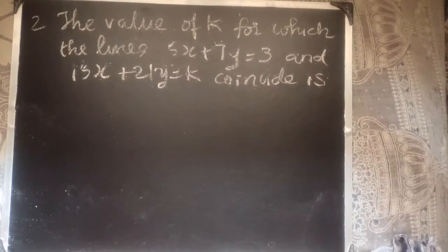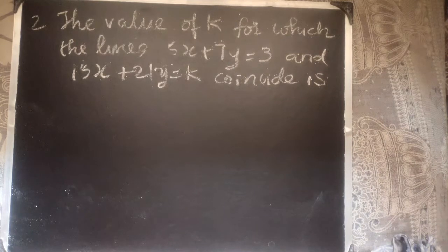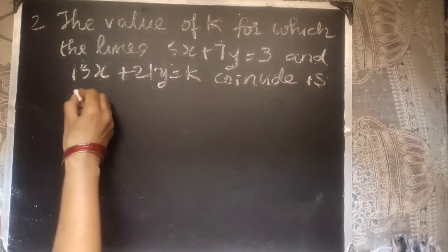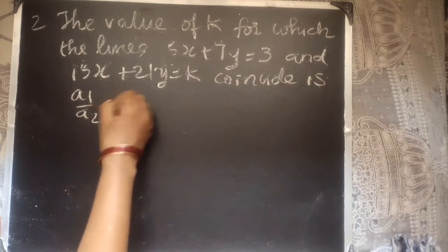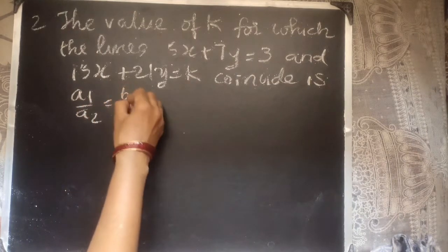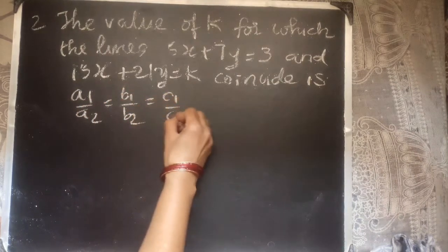The second question: find the value of K for which the lines 5X + 7Y = 3 and 15X + 21Y = K coincide. The condition for coinciding lines is A1/A2 = B1/B2 = C1/C2.